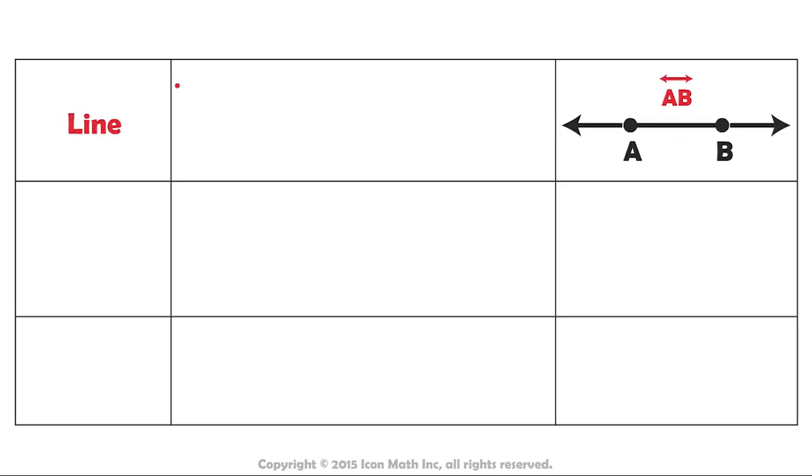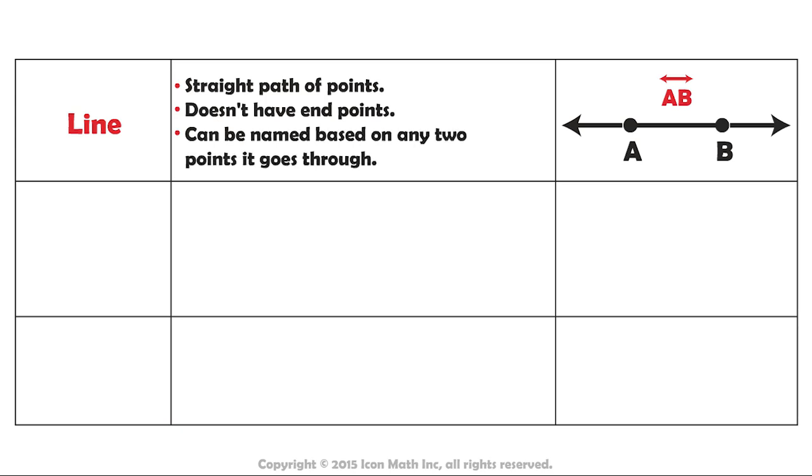To summarize, a line is a straight path of points that goes on forever and can be named based on any two points it goes through.